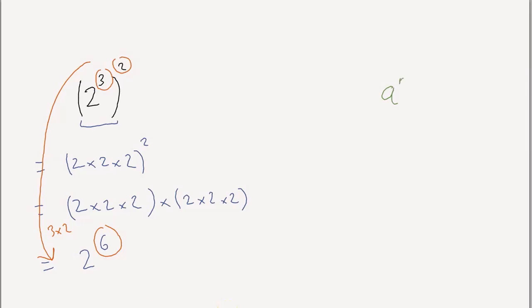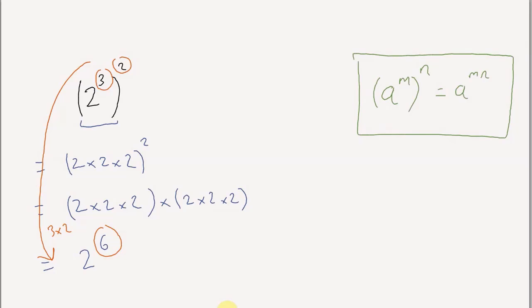So the third rule: a to the power of m, raised to another power n, equals a to the power of m times n. For example, a to the power of three, all raised to the power of five, equals a to the power of three times five, which is fifteen.